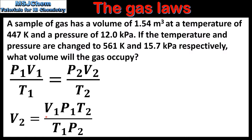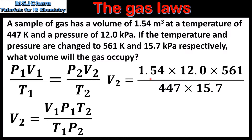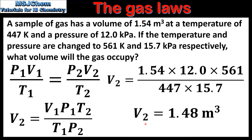V2 equals V1 times P1 times T2 divided by T1 times P2. Substituting the values: V1 is 1.54 cubic metres, P1 is 12.0 kilopascals, T2 is 561 kelvin, T1 is 447 kelvin, and P2 is 15.7 kilopascals. This gives us a value for V2 of 1.48 cubic metres.